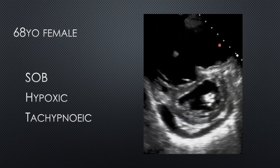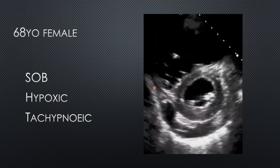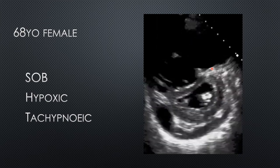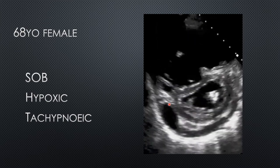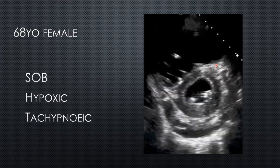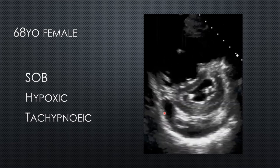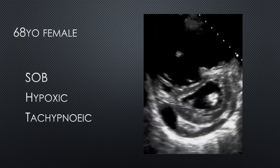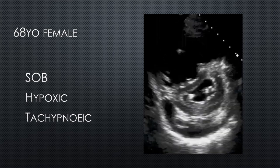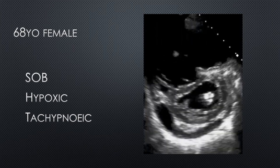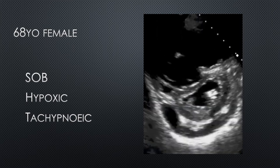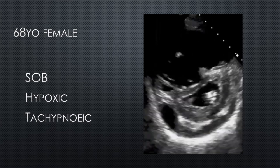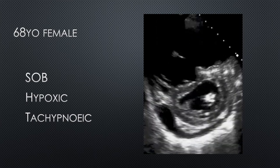The RV is massively dilated. And what about the septum? Yes, there's septal flattening. There's also a trivial pericardial effusion that's probably not relevant. So he asks you, can I thrombolyse this lady? What would you say? What else would you want to know about this patient before making that decision?